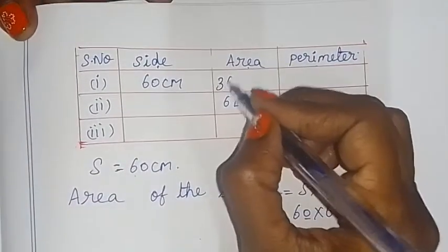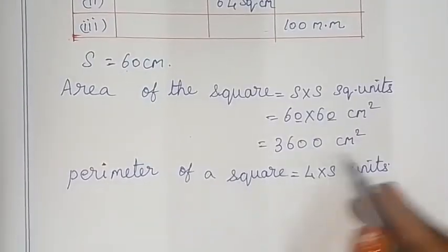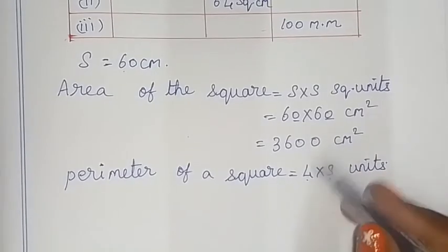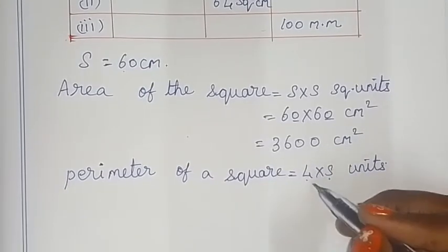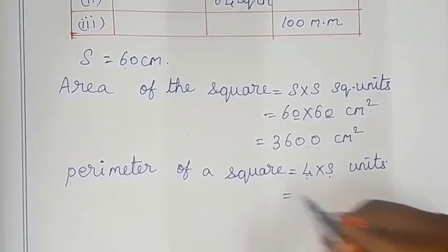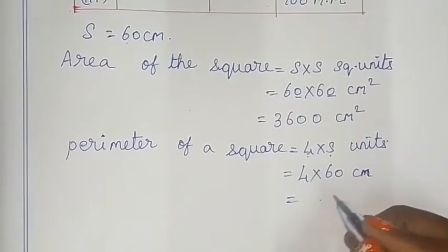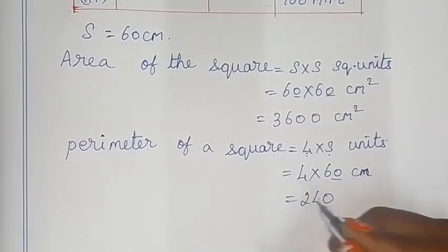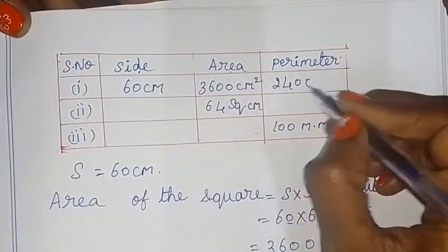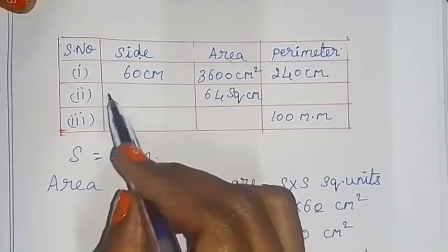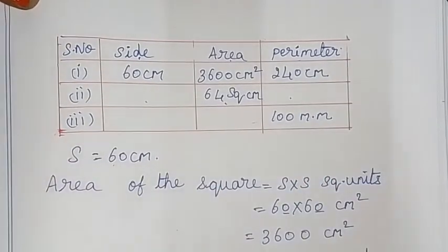Perimeter of a square = 4 × S, which is S + S + S + S. So perimeter = 4 × 60 = 240 cm. Now in the next square problem, the area is given and we need to find the side and perimeter.